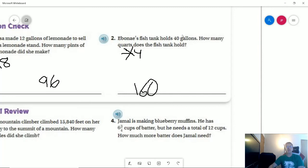If we are changing from gallons to quarts, there are four quarts in a gallon. We are going to need to multiply this by four to get 160. So those were our problems for the homework for today.